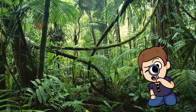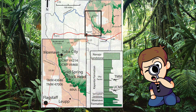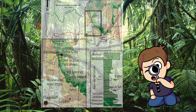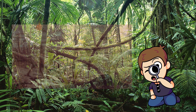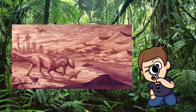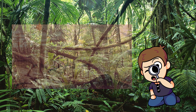Discovered in Arizona in 1940 on the Kayenta Formation of Navajo County by Jesse Williams, Dilophosaurus would have lived in a dry environment with towering sand dunes around the edges of lush oases. In this unique habitat, Dilophosaurus was, for the time, the largest carnivore in the area, dominating its habitat until 183 million years ago when it went extinct.